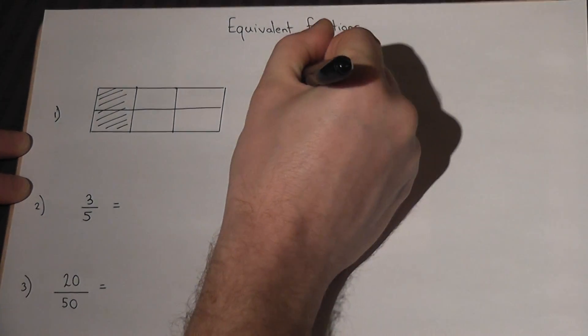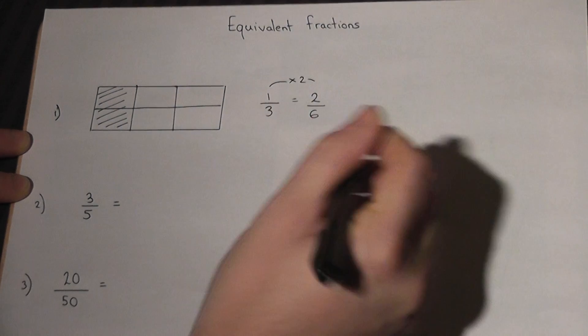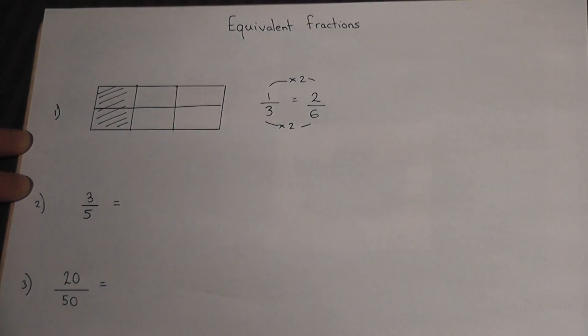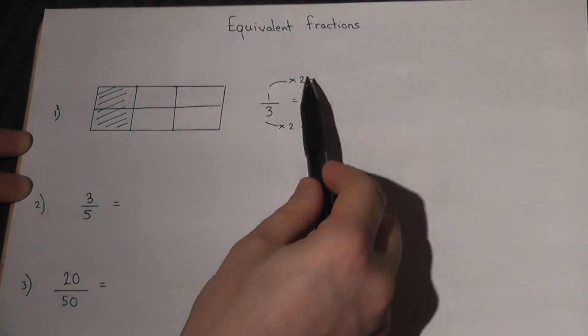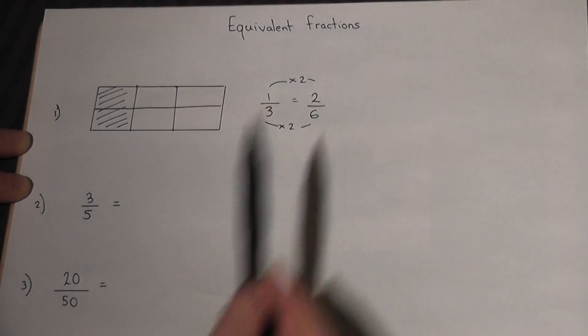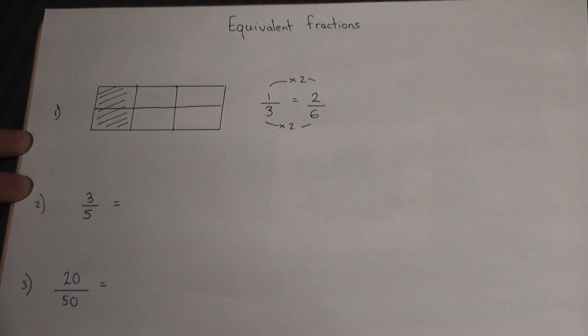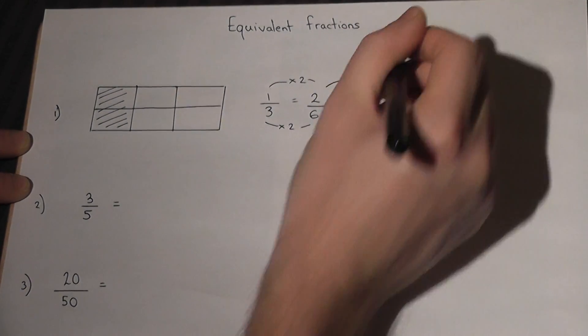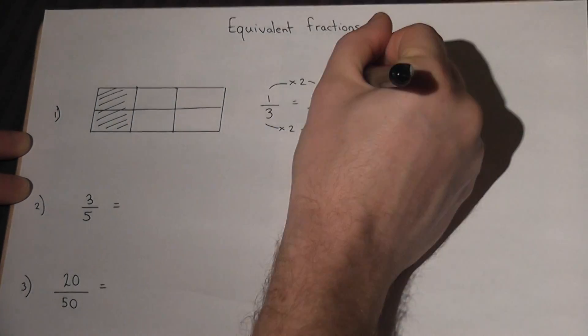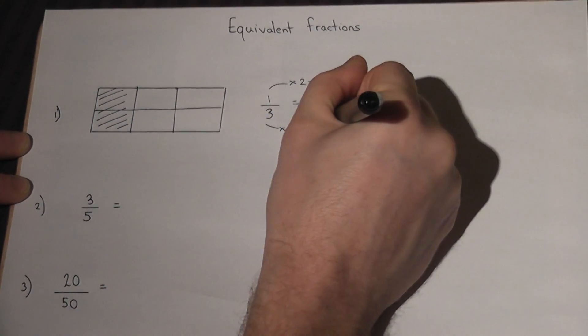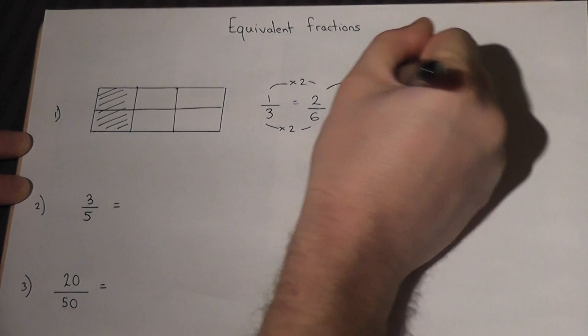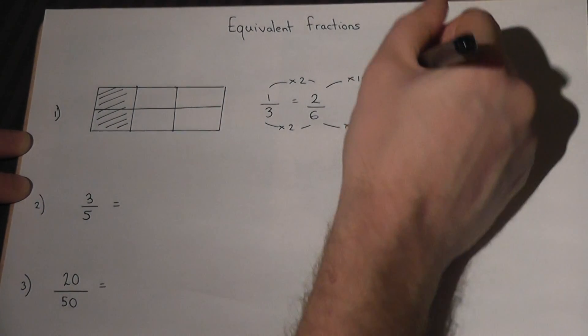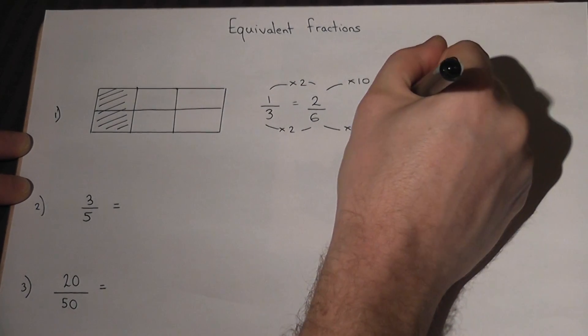These are therefore the same fraction, so what I've done is I've effectively doubled the top and the bottom of the fraction. If you times the top and bottom of a fraction by the same amount, it's still the same fraction. So I could times this one by any number I want, for example 10, as long as the top and bottom are times by the same number. So this would become 20 over 60.